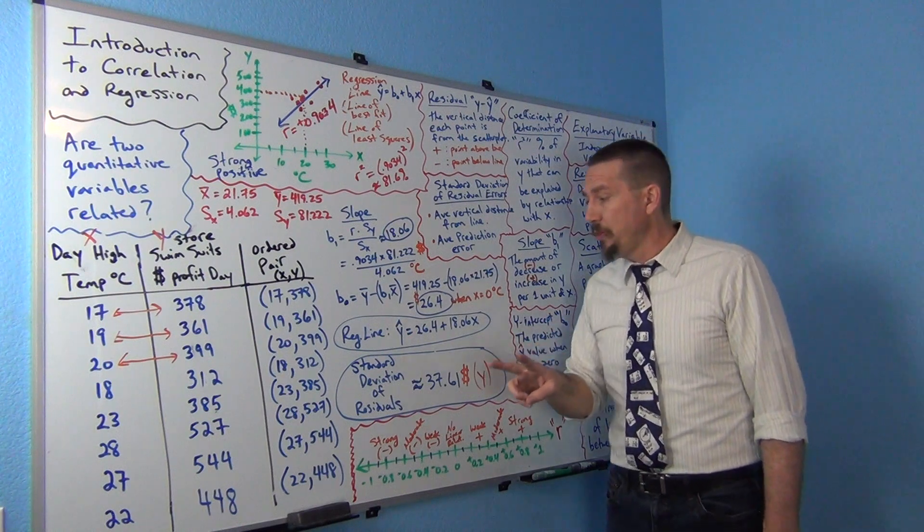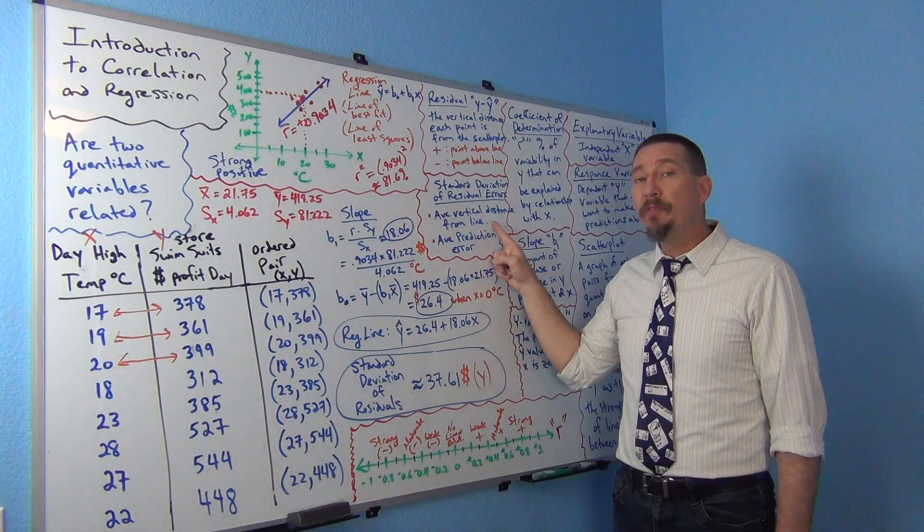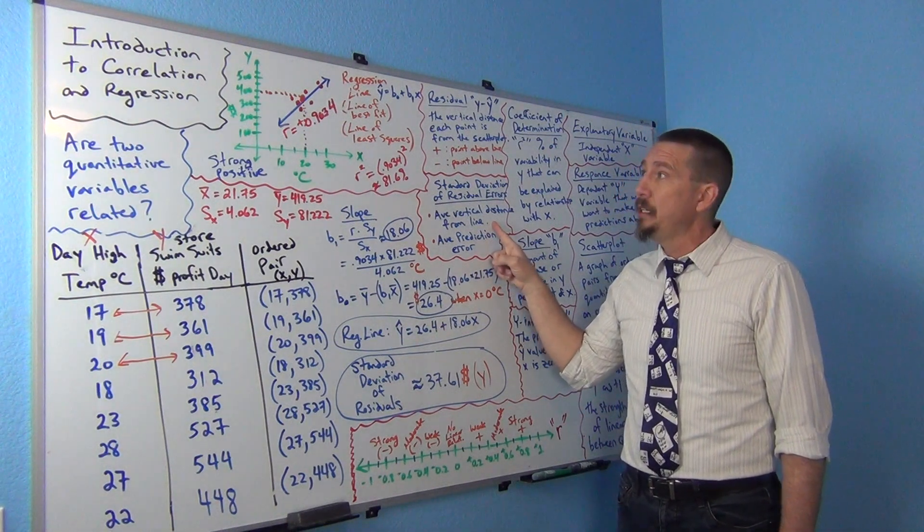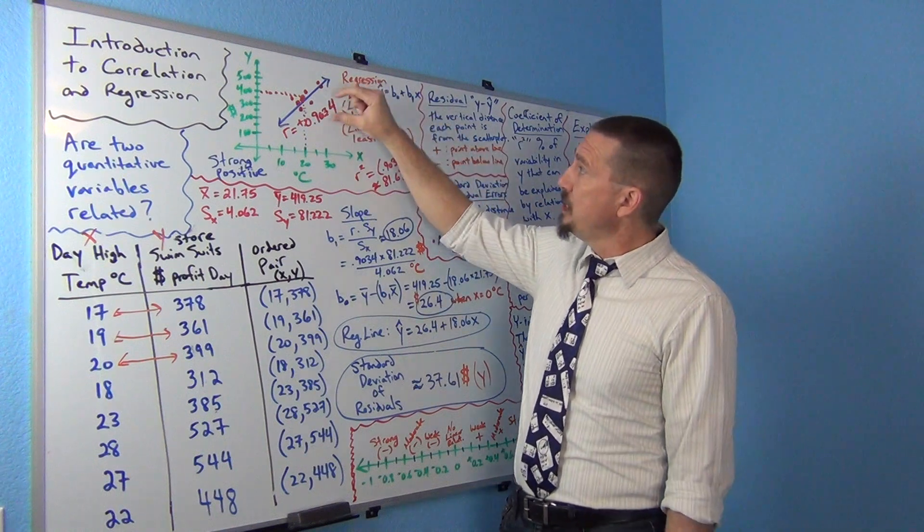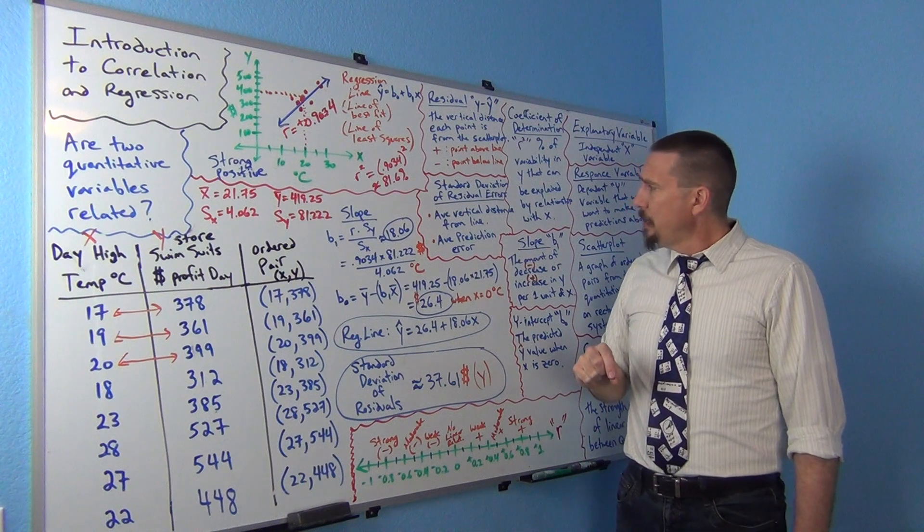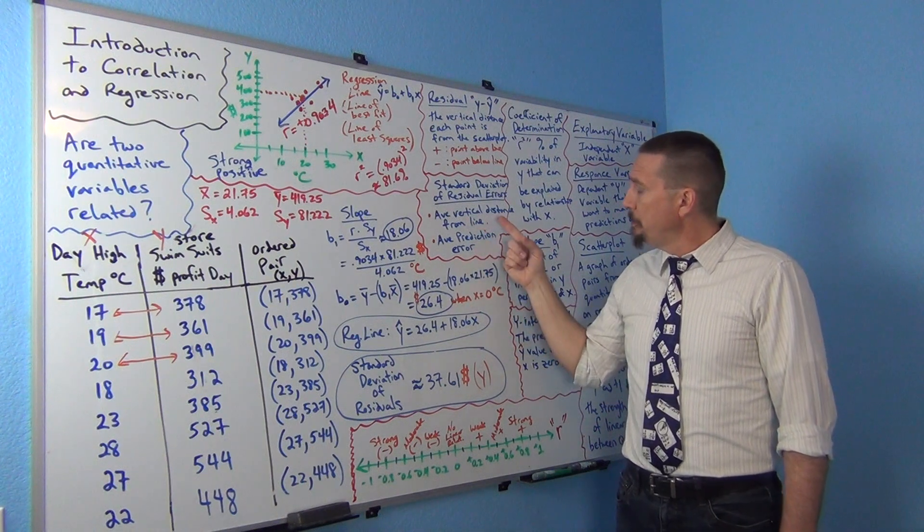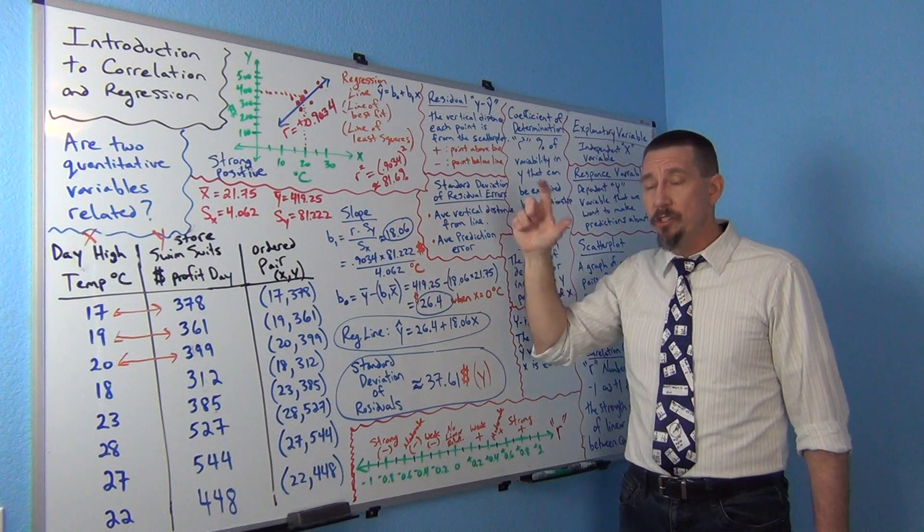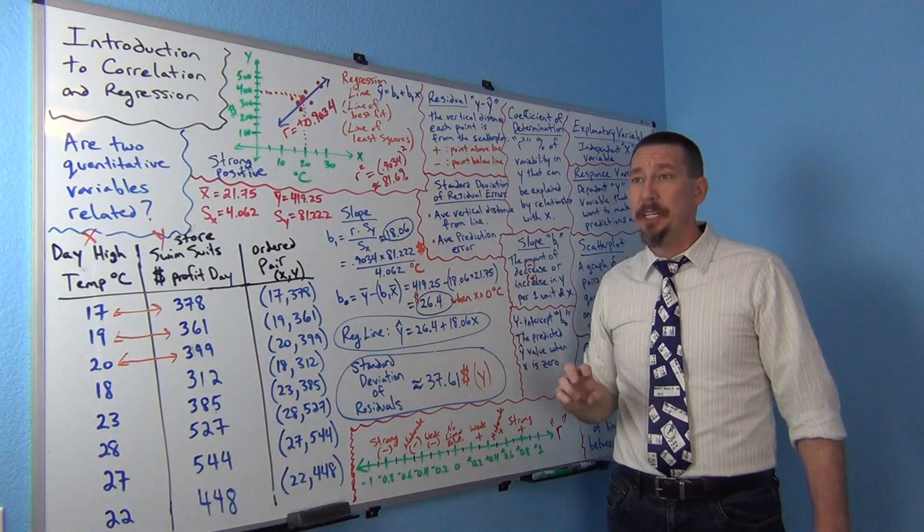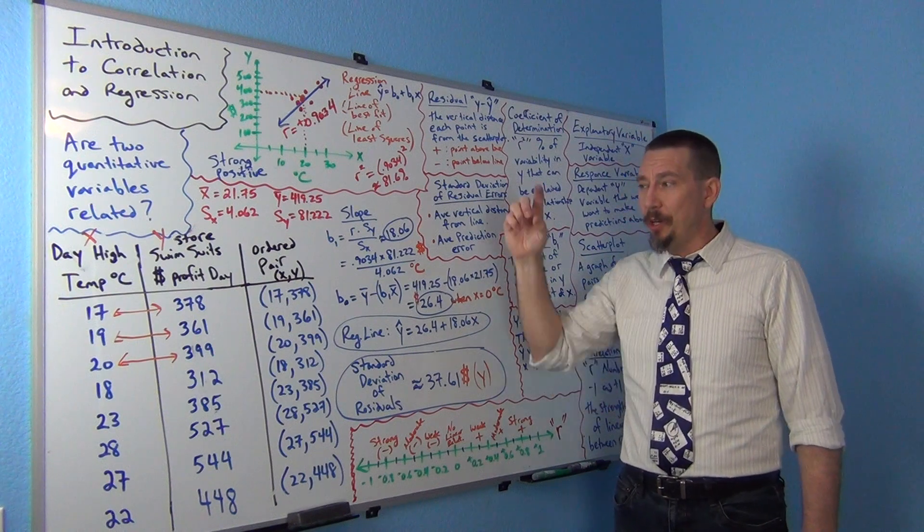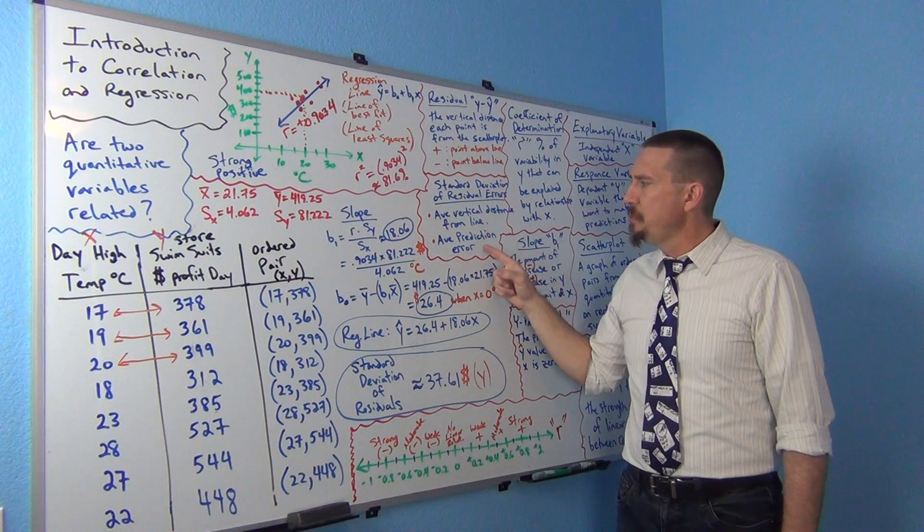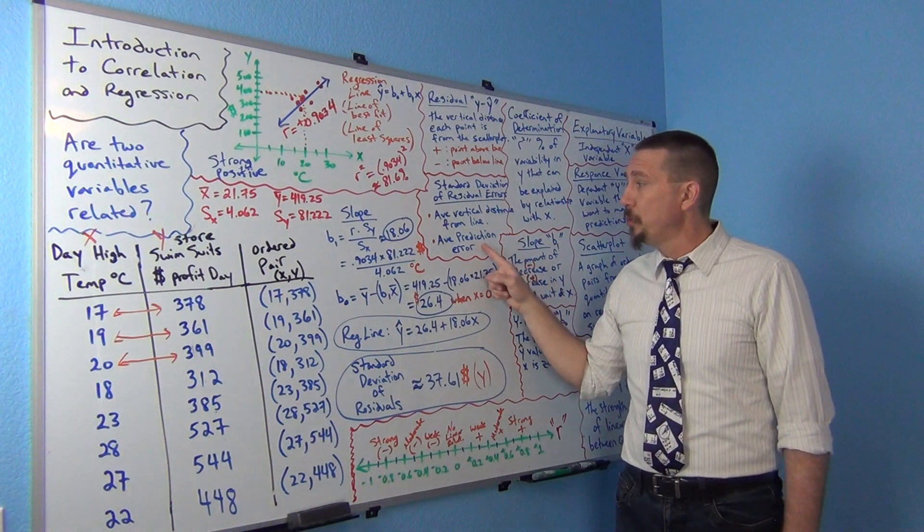Now what is it? Well it actually tells me two important things. First of all it tells me how far the points are from the line vertically, the average distance from the line vertically. But not just that, it actually tells me the average prediction error. That's actually very important.